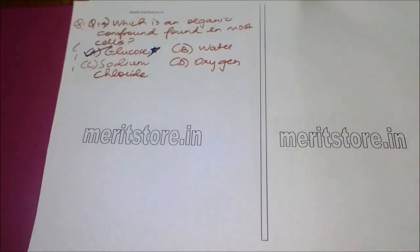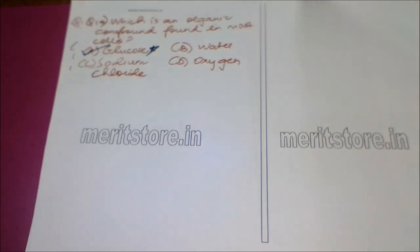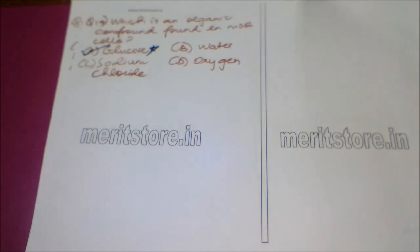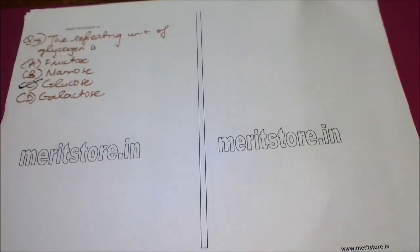The question is: which is an organic compound found in most cells? Option A: glucose, Option B: water, Option C: sodium chloride, and Option D: oxygen. Option A, glucose, is known to be an organic compound, while water, sodium chloride, and oxygen are not organic compounds. It is also important to remember that glucose is one of the most abundant organic compounds. The correct answer is Option A: glucose.